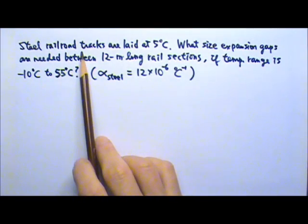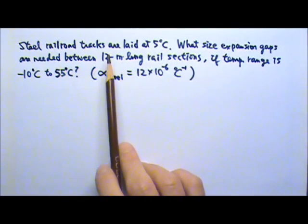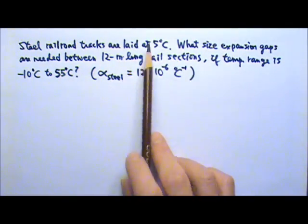Steel railroad tracks are laid when the temperature is 5 degrees Celsius. A standard section of rail is 12 meters long at that temperature.